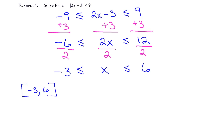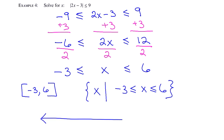In set builder notation, we would have the set of x such that negative 3 is less than or equal to x is less than or equal to 6. If we wanted to represent the solution on a number line, we would mark negative 3 and 6. It's closed at negative 3, so we use a square bracket. It's closed at positive 6, so we use a square bracket there as well. And x is between negative 3 and 6, including those two values, so we highlight everything in the middle.